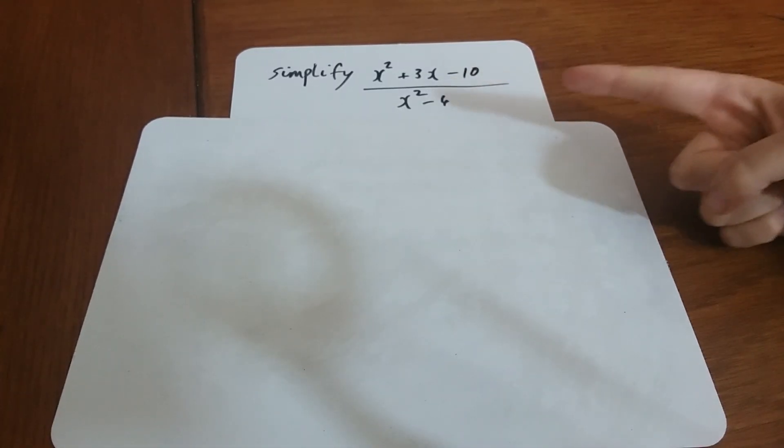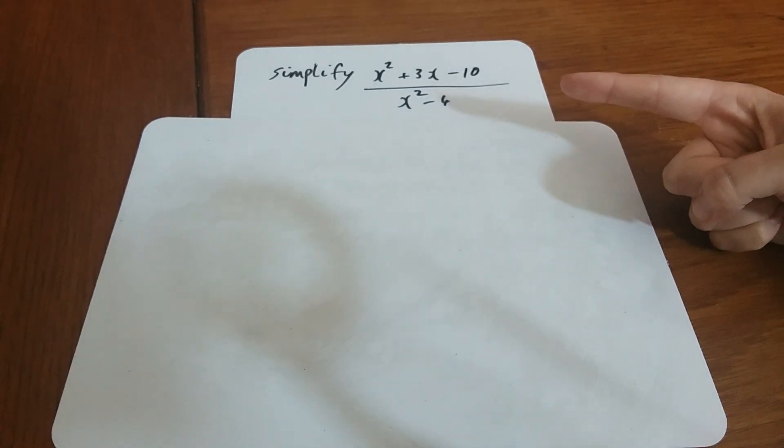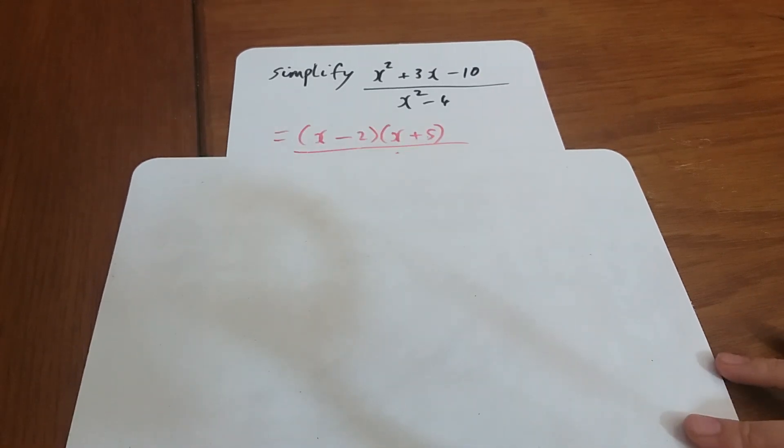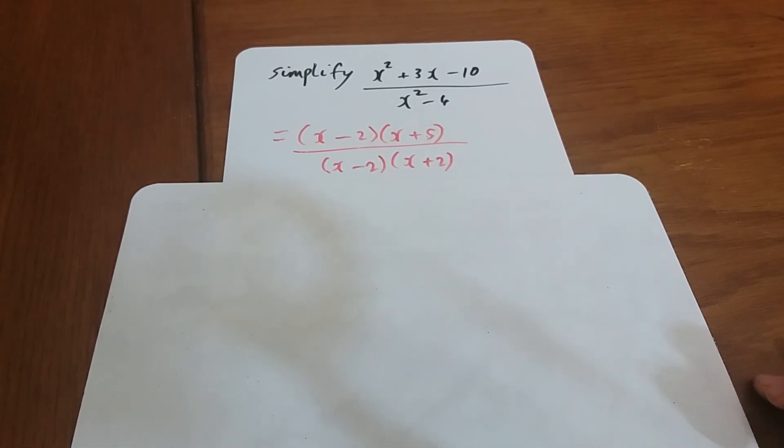Algebraic fractions. At the top here we have a quadratic over a quadratic. We're going to try and simplify it. The tactic here is to factorize. So if we factorize the top and the bottom, there's the top which just goes into two separate factors: x minus 2 and x plus 5.